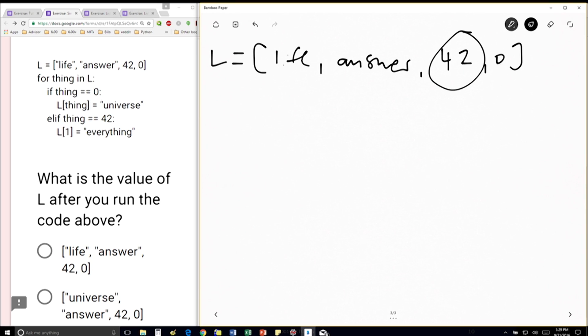So for the first two iterations, when thing is equal to life or answer, I'm not doing anything. As soon as I hit 42, though, I'm saying L at position 1 is going to get this value here. So when I've iterated over this element here, I'm saying L at position 1, I'm going to change its value, which says, well, I'm going to keep life the same, but this is going to be everything. And then we're keeping the rest the same, 42 and 0, because we're only modifying L at position 1.